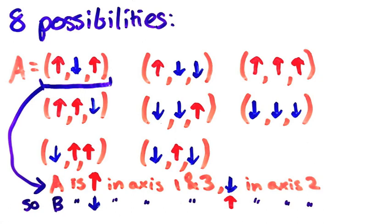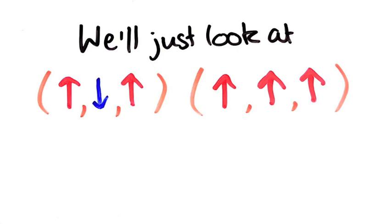It would take a while if we had to go through every single possibility, but luckily for me we don't. We'll just look at the case where A is spin up in axis 1 and 3 and spin down in 2, and the case where A is spin up in every axis.